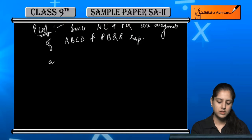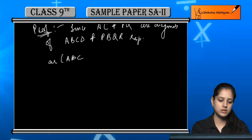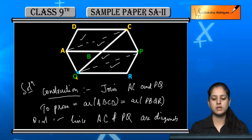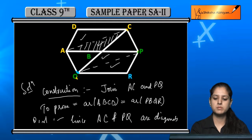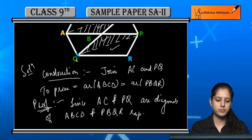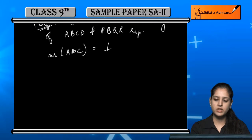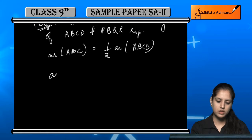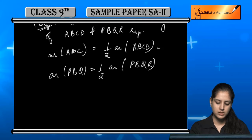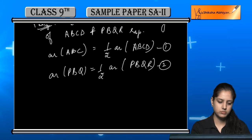इसका मतलब है कि area of △ABC = half of area of ABCD — यह equation 1. और area of △PBQ = half of area of PBQR — यह equation 2. इस तरह हमने ABCD को △ABC की terms में और PBQR को △PBQ की terms में लिखा.